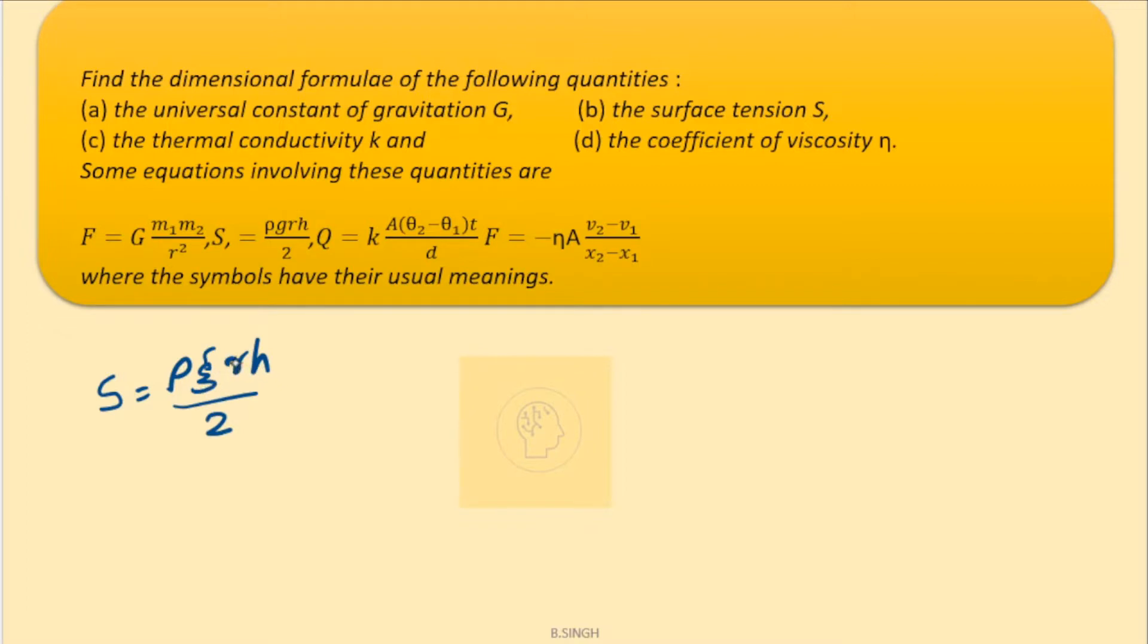To get the dimensions of the surface tension which is S, now rho here is nothing but the density. We know that the density is nothing but mass upon volume. So dimensions of mass is M1 L0 T0, so it is M1. Dimensions of volume is M0 L cube T0. So the dimensions of rho is M1 L minus 3.